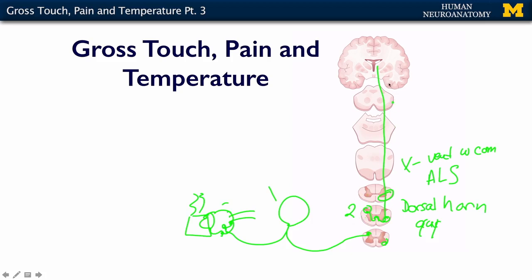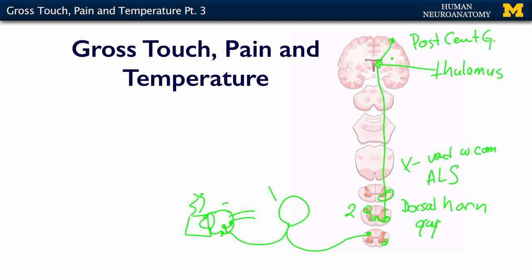That's the second neuron. Neuron number three is in the thalamus. Neuron number three gets information from neuron number two, and it projects to the post-central gyrus — that is where gross touch, pain, and temperature come to perception. It's where you actually notice that the mug is hot.